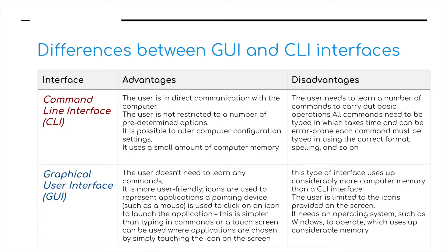The disadvantages of a command line interface: the user needs to learn a number of commands to carry out basic operations, all commands need to be typed in which takes time and can be error prone, and each command must be typed in using the correct format and spelling. The graphic user interface disadvantages: this type of interface uses considerably more computer memory than a CLI interface, the user is limited to the icons provided on the screen, and it needs an operating system such as Windows to operate which uses up a considerable amount of memory.